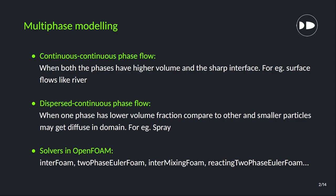For the liquid-gas simulations, we have two basic types: continuous-continuous flow and dispersed-continuous flow. In the first one, we can capture the sharp interface between two phases and there is no fading or dispersed phenomenon involved. Whereas in the second one, we have one phase getting dispersed into the other phase. The volume of fluid model falls under the first category — continuous-continuous flow.